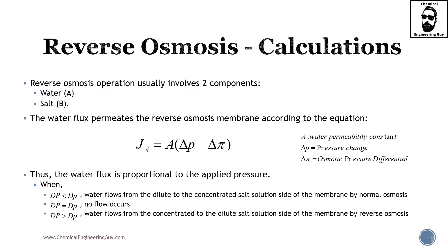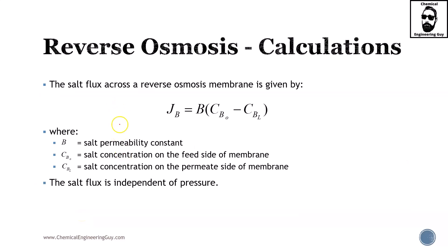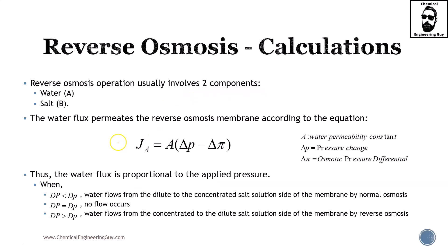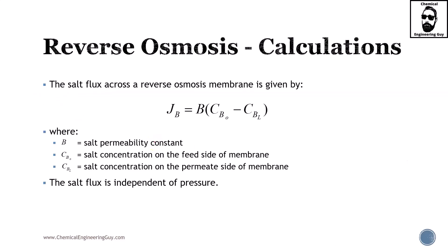Calculations for reverse osmosis typically involve two main components: water and salts. The water flux through the reverse osmosis membrane depends on the difference in applied pressure minus osmotic pressure. The salt flux across the membrane is given separately — do not assume it is simply the negative of the water flux. It is based on the salt permeability, the salt concentration in the feed, and the salt concentration in the permeate, and a balance is typically performed on the permeate side.